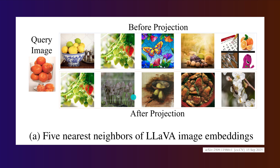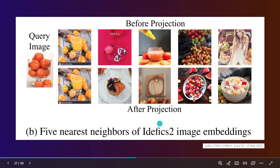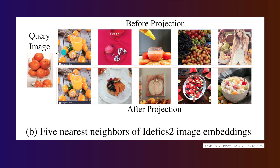With idefics2, again looking at the closest images to our query image, we have an overlap, but the rest of the images after projection are completely different — we are somewhere else in the space. We have projected this particular visual information into a complex, different region. This can induce a lot of problems and we will see this induces the errors and losses we encounter in vision language models.